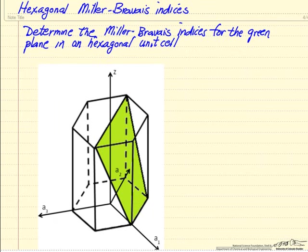We use a notation with four indices, so there's H, K, I, and L, which is different from the cubic structure.